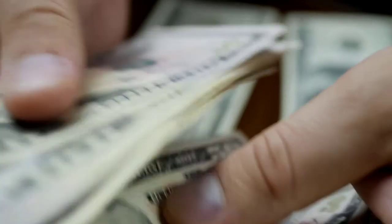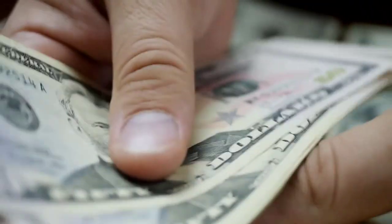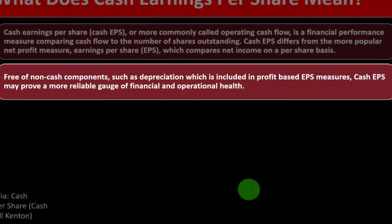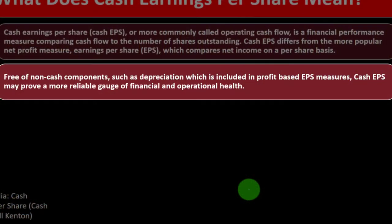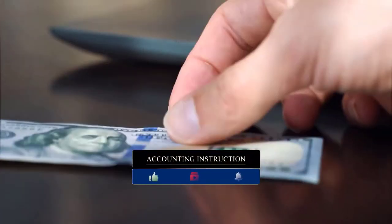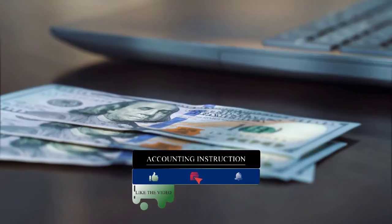We might also want to look at performance on a cash basis and compare it to the number of shares outstanding. Free of non-cash components such as depreciation — which is included in profit-based EPS measures — Cash Earnings Per Share may prove a more reliable gauge of financial and operational health. The accrual method includes expenses like depreciation that are not cash-related, and depreciation can be a big number depending on the type of company.